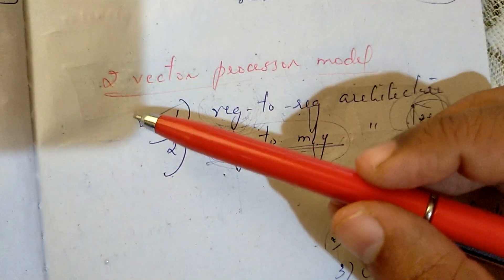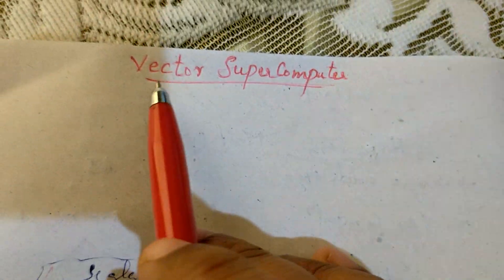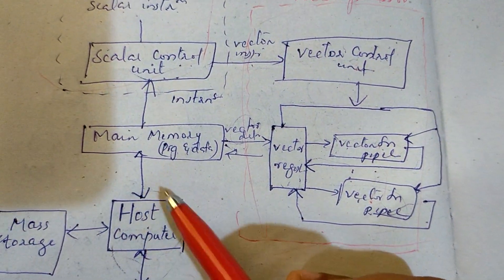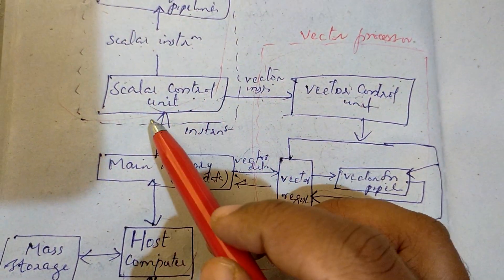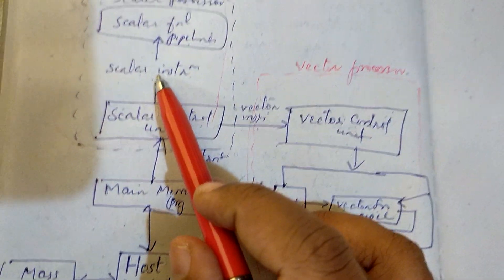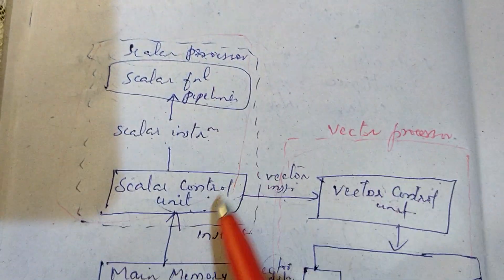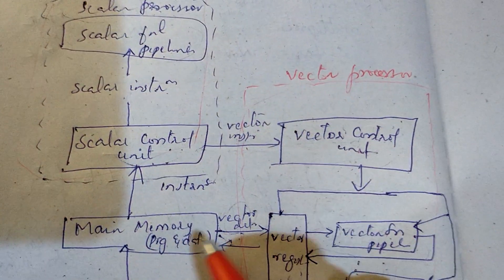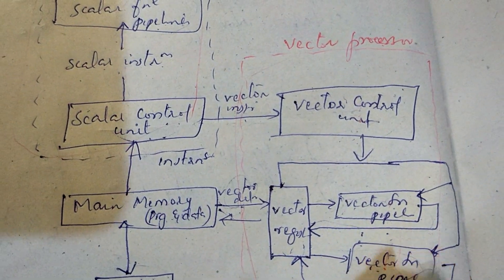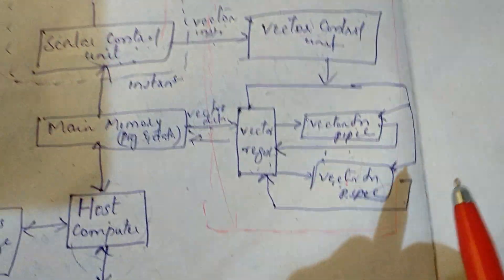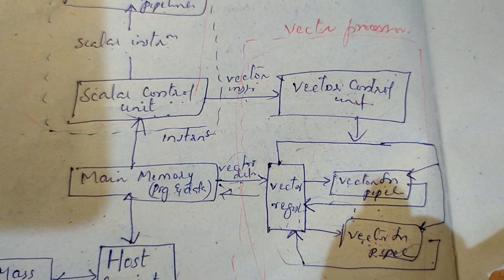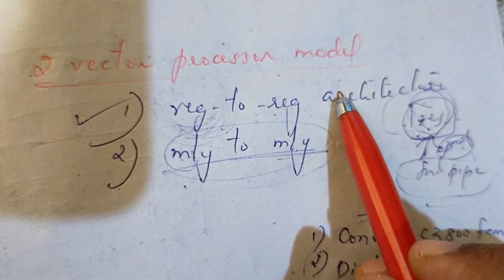This is how we retrieve the two Vector Processor models. In a Vector Supercomputer, we first load the main memory via the user and host computer. We decode the instructions in the Scalar Control Unit, then execute Scalar Instructions in the Scalar Functional Pipeline via the Scalar Processor. For Vector Instructions, we coordinate through the Vector Control Unit, which manages vector data flow between main memory and vector functional pipelines. The models are memory-to-memory and register-to-register.